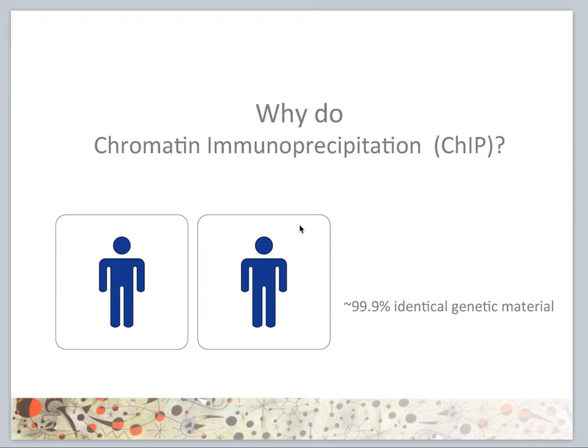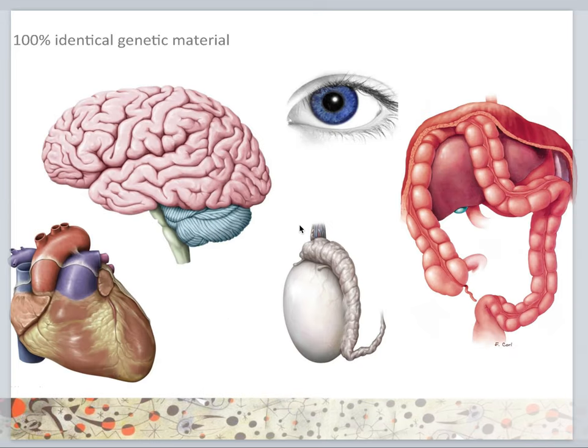Why do we want to do chromatin immunoprecipitation, also known as ChIP? If we consider two individuals, their genomic blueprint is identical at 99.9%. So what is it that makes two individuals different? And if you think about a single individual in which cells contain identical genetic material, what is it that allows for the development of different organs?